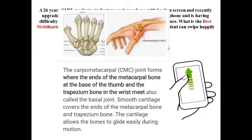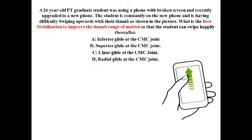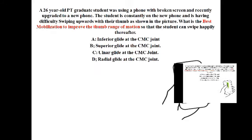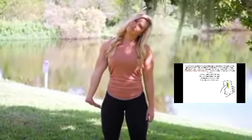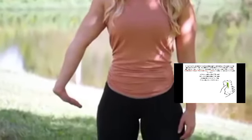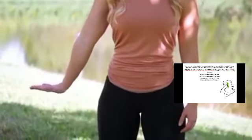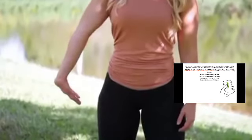How should we apply the radial glide to improve thumb extension and ease the movement to improve thumb range of motion? There are five steps to follow. Step one: the patient can be in a sitting or standing position with the body in a relaxed position.